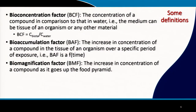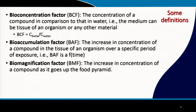What do you need for bioremediation? You need acclimated microbial communities — you can have pure species, meaning single species, or you can have consortia. Then you need adequate nutrient supply. The bioconcentration factor has been defined as the concentration of a compound in comparison to that in water — the medium in comparison can be the tissue of any organism. The bioaccumulation factor is the increase in the concentration of a compound in the tissue of an organism over a specified period of exposure. If a particular organism has been exposed to a particular compound for months or years, it is accumulating that compound in its tissue — it is a function of time.